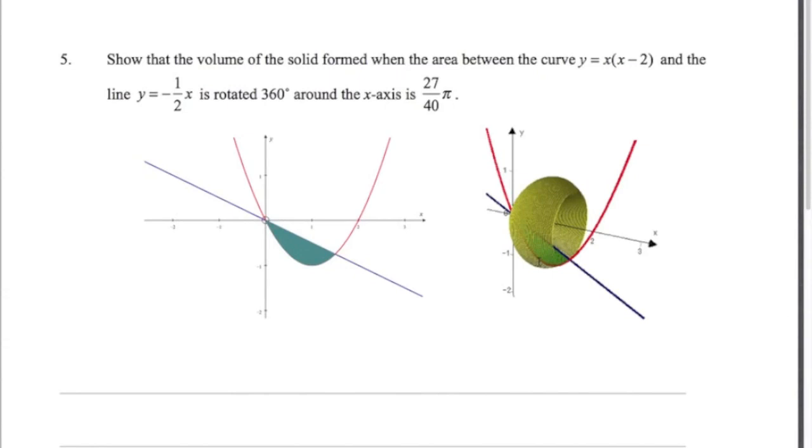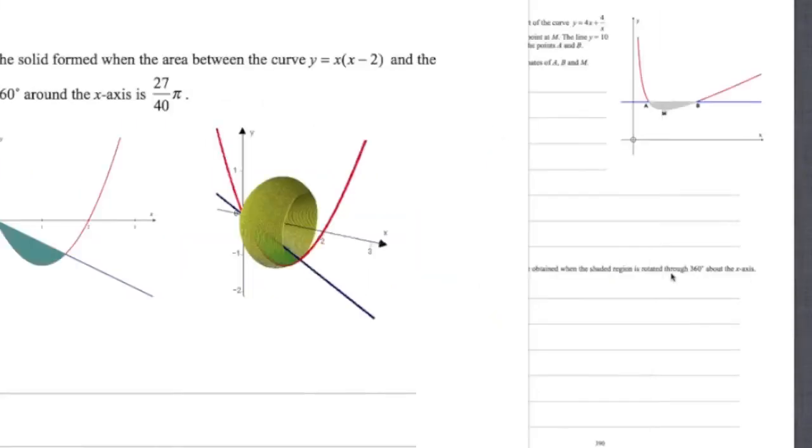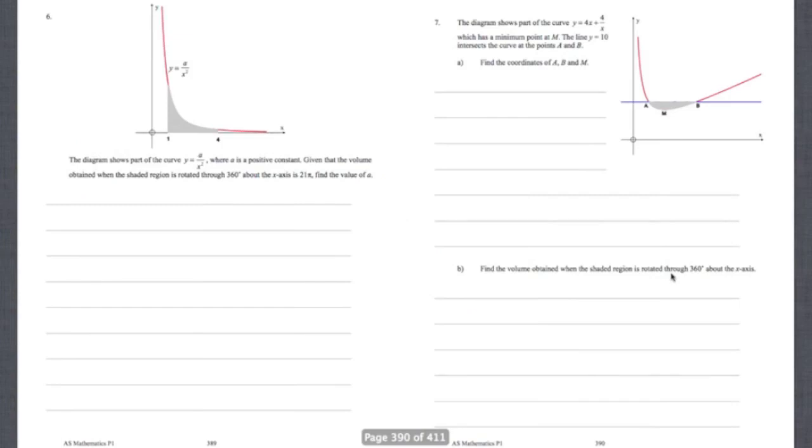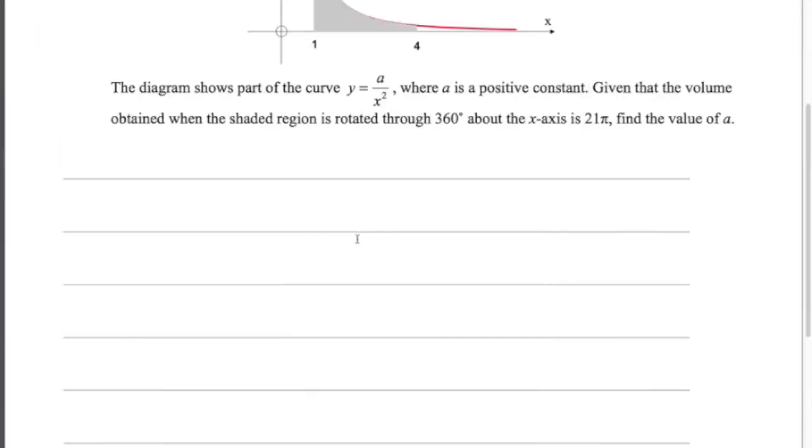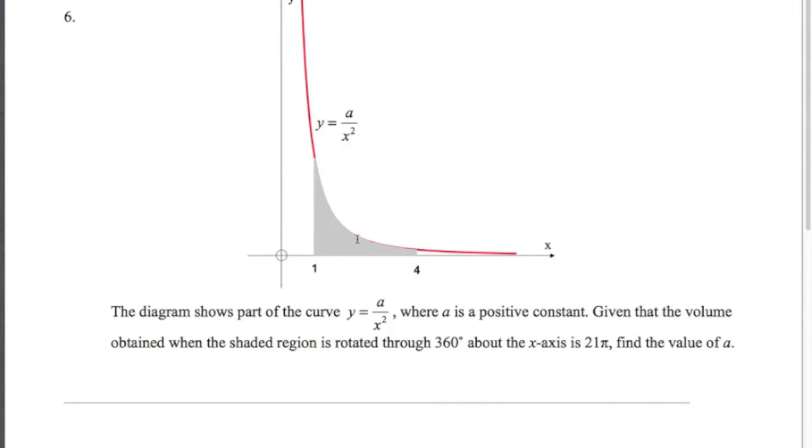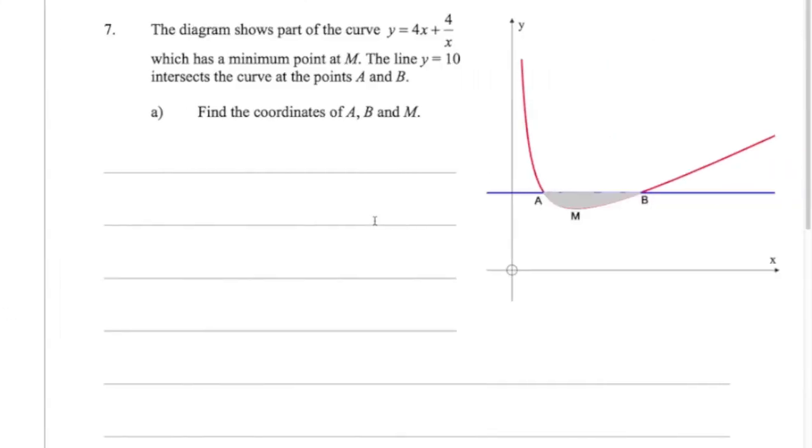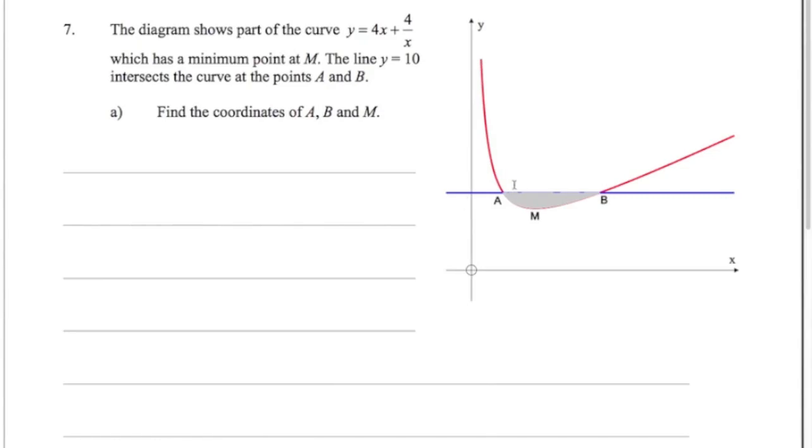Some questions in the exam may look like this one, where they ask you to show that the volume is a certain value. You need to set out your working very clearly. They're already giving you the answer here, 27 over 40 pi, it's up to you to show that that's true. Because some calculators now can work out these volumes, including the new Casio calculator, the FX991ES, you're more likely to get a question like this where we've got an unknown constant in the equation. You're given this volume, here it's 21 pi, and you have to work backwards to find out what the value of that constant is.